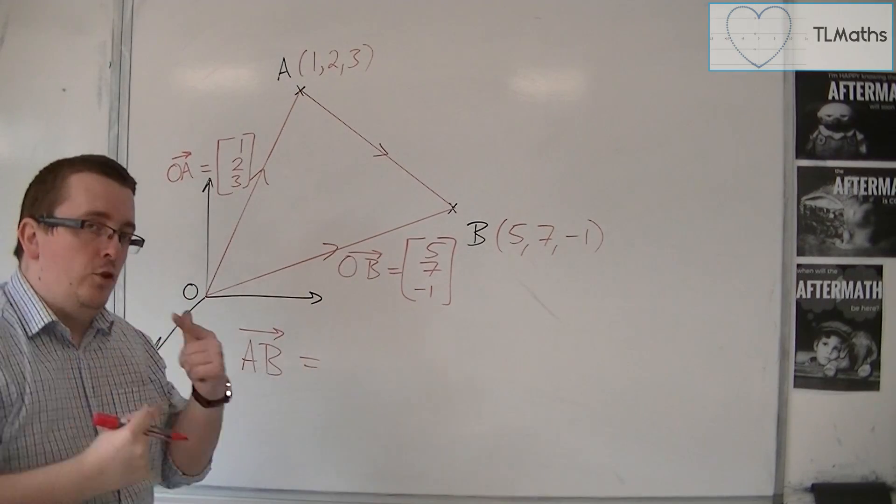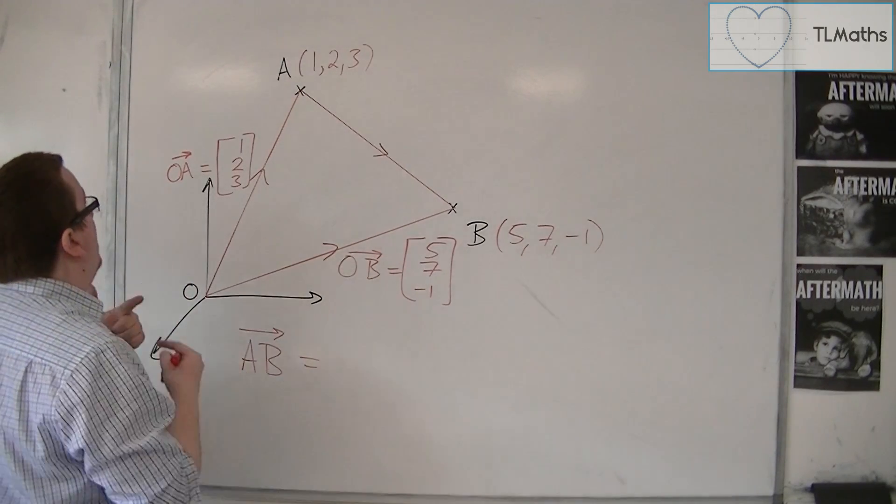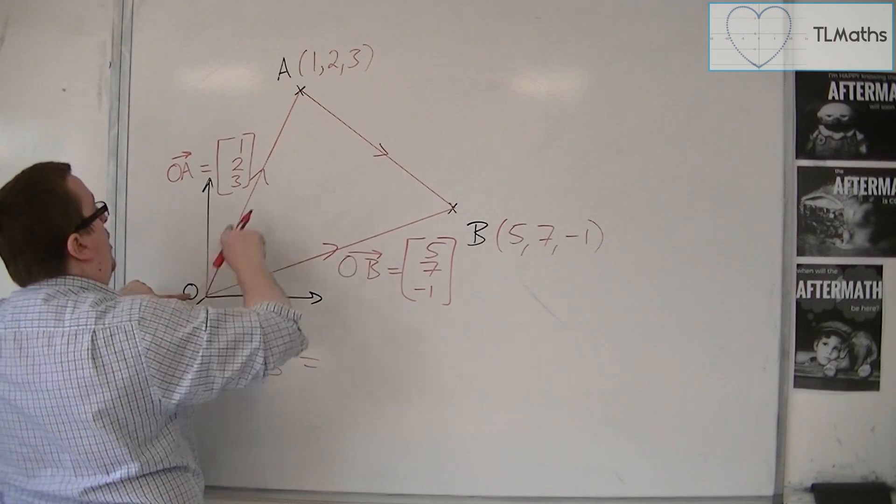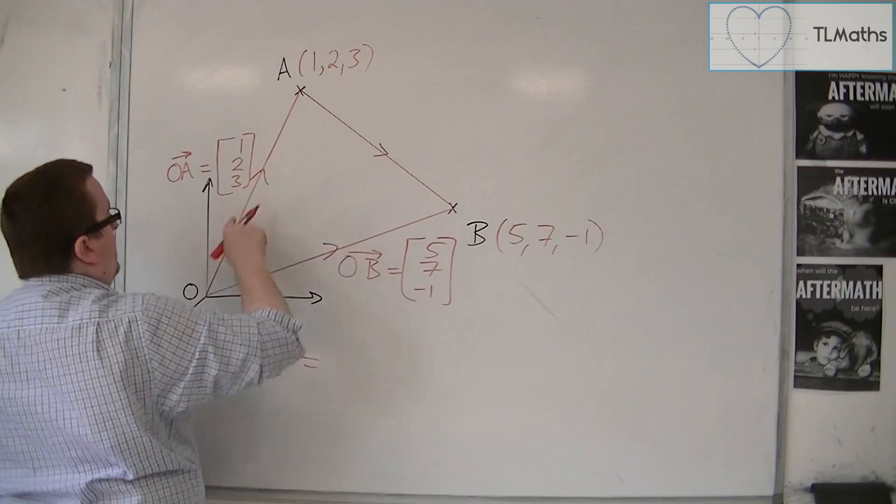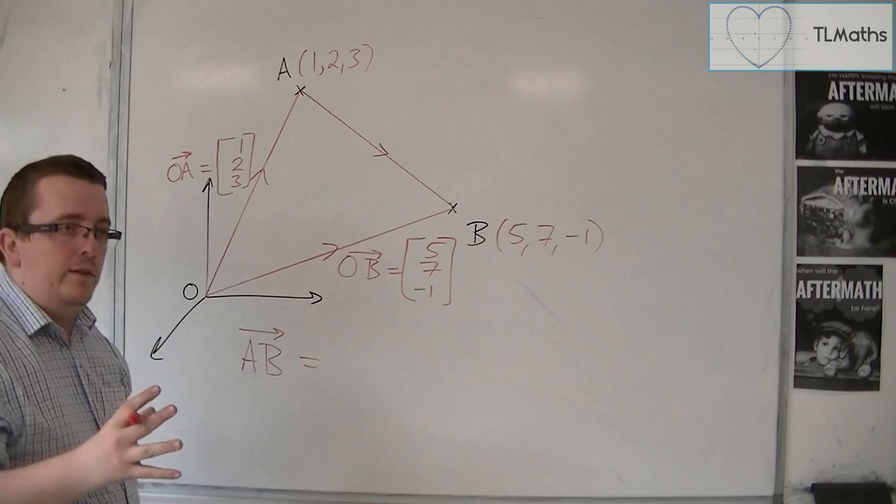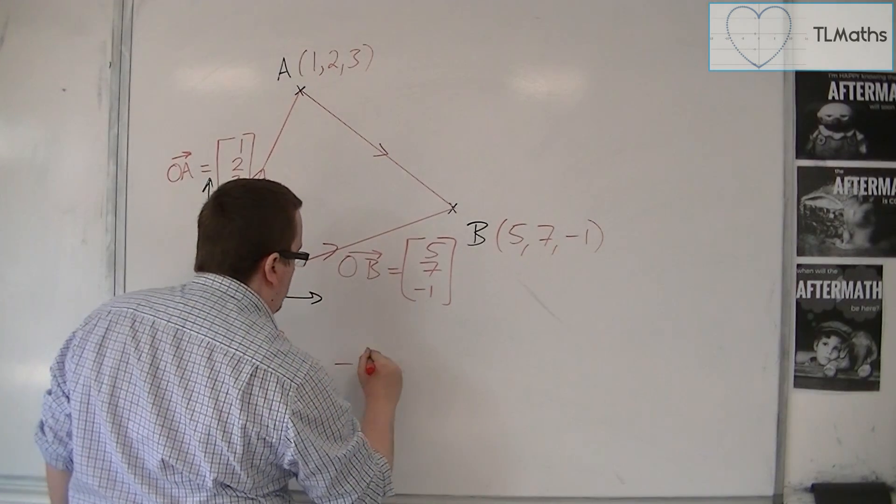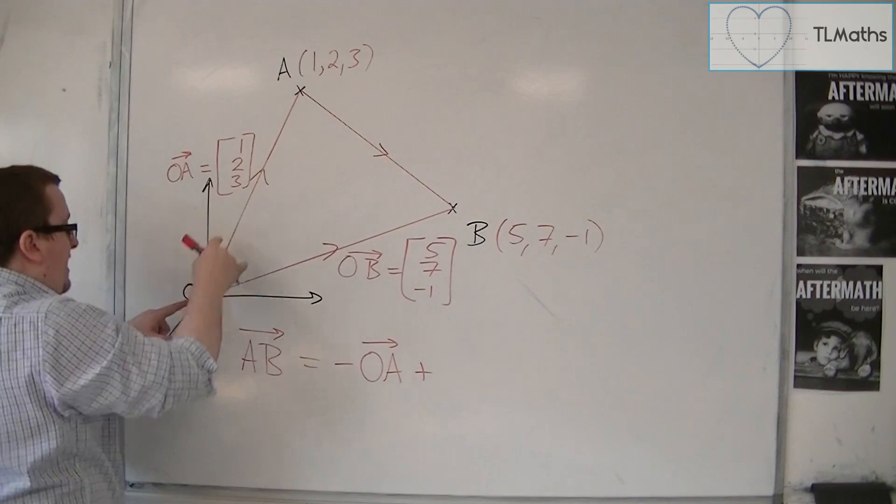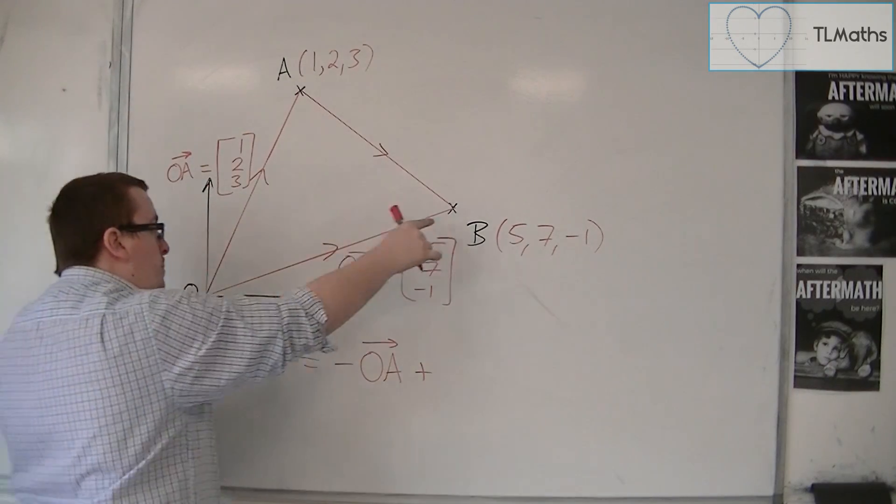The only problem is that in order to go along A to O, I'm actually going backwards on myself. I'm going backwards on myself, and so if that is OA, then going backwards on myself is minus OA. Okay, so I could write this as minus OA plus, so that gets me to the origin, plus OB.